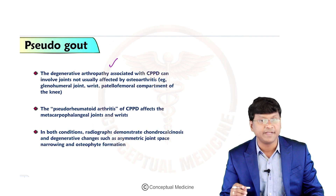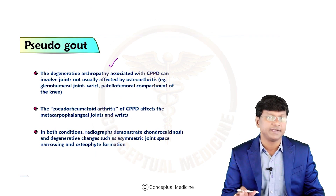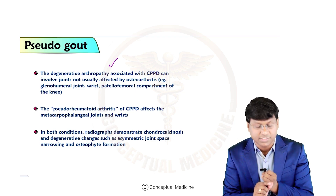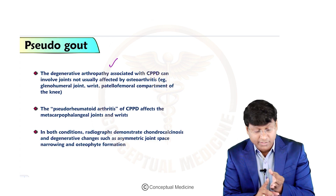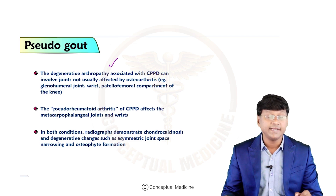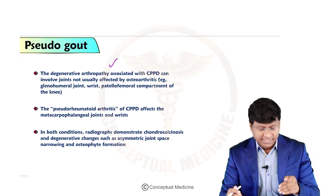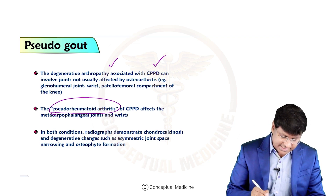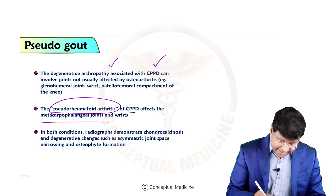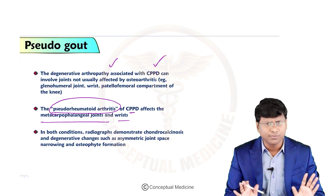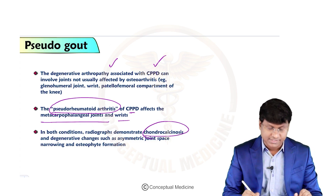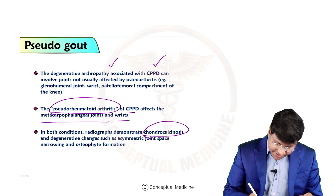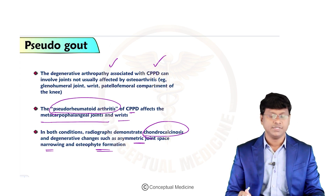The degenerative arthropathy associated with CPPD can involve joints not usually affected by osteoarthritis, including the glenohumeral joint, the wrist joint, and the patellofemoral compartment of the knee. In pseudo-rheumatoid arthritis of CPPD, it affects the metacarpophalangeal joints and the wrist. In both conditions, radiographs demonstrate chondrocalcinosis and degenerative changes such as asymmetric joint space narrowing and osteophyte formation.